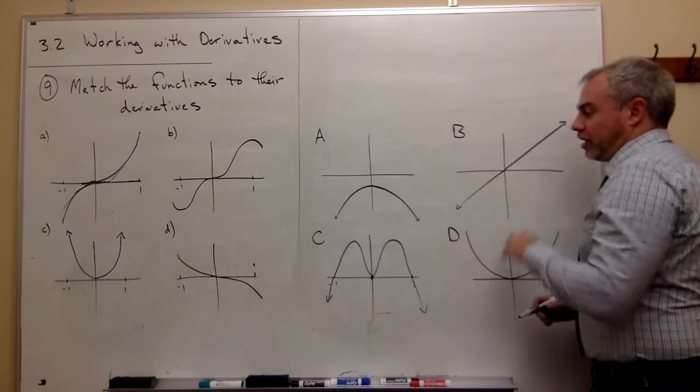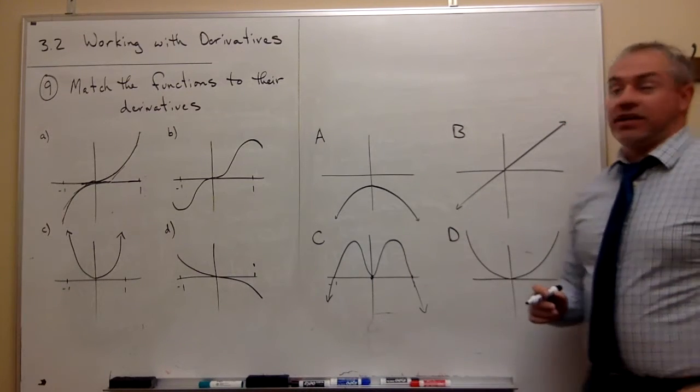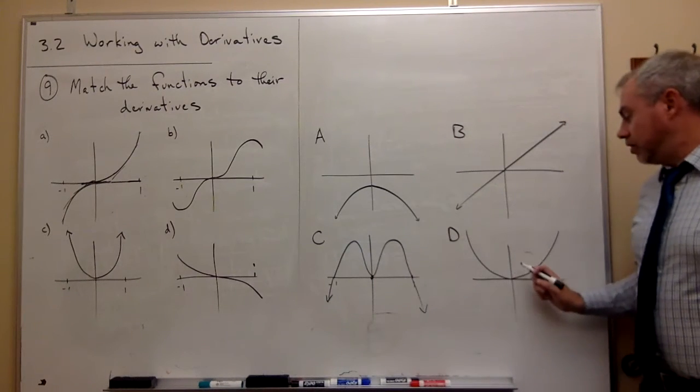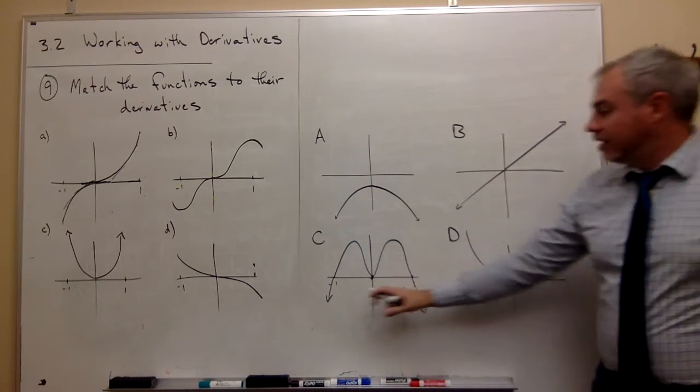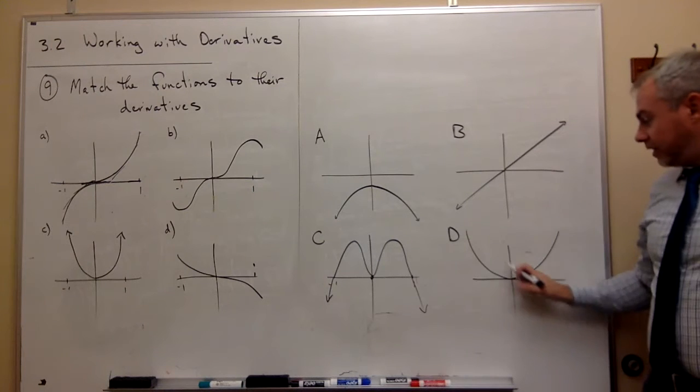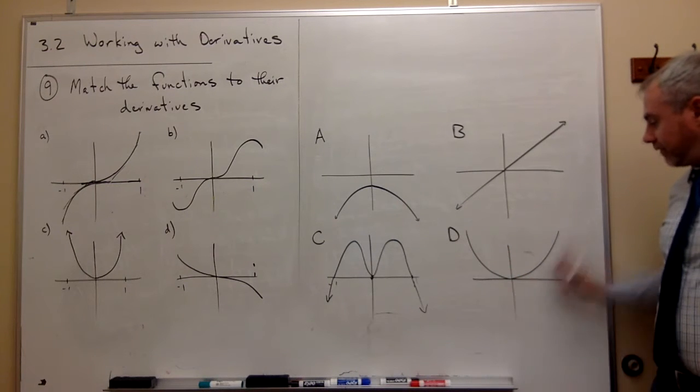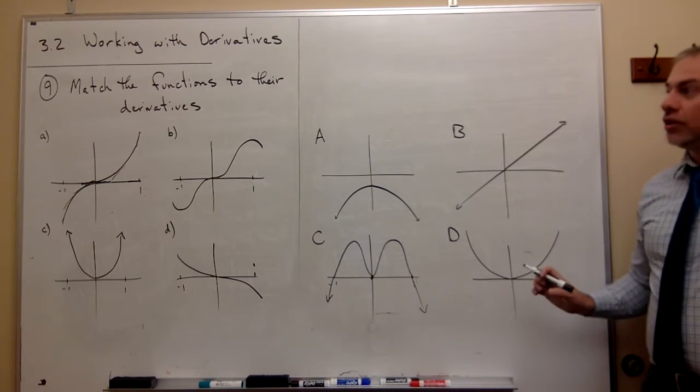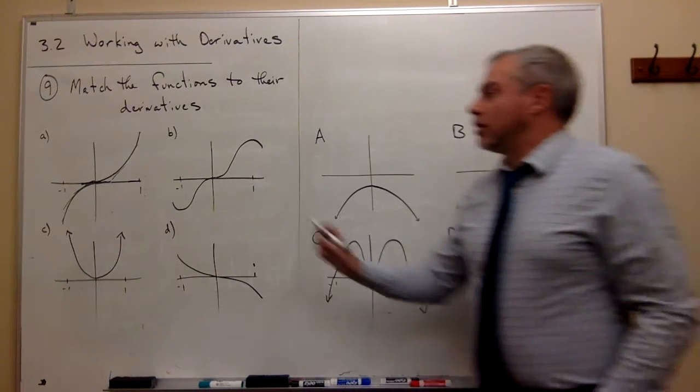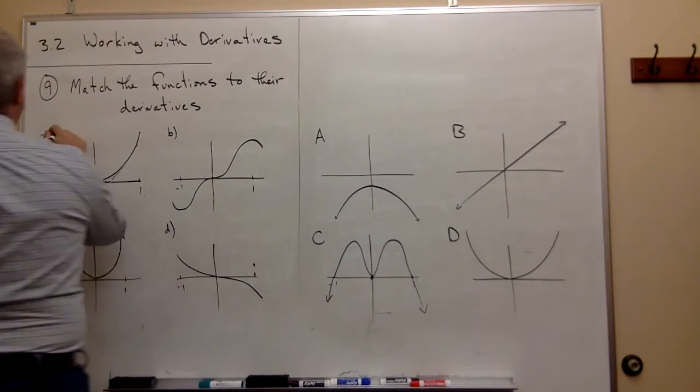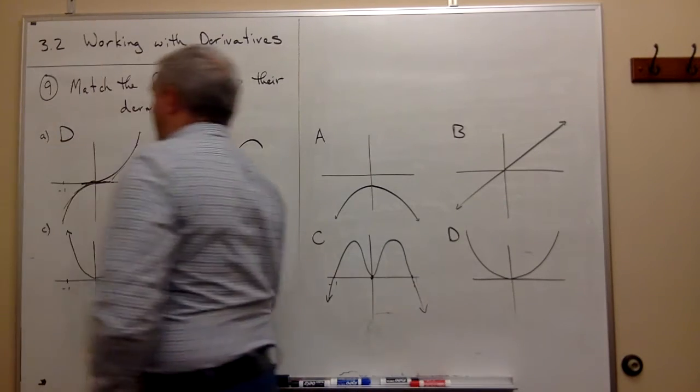So I'm looking for a graph over here that's always positive except at zero. This is negative the whole time. This is negative over here. This is negative sometimes. But this is always positive except at zero. So the only option that I really have is D. So the answer to part a is graph D.